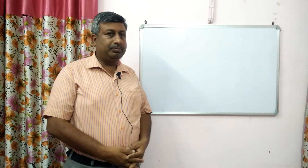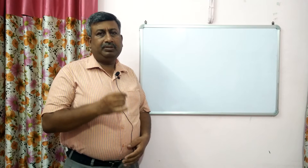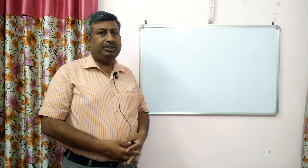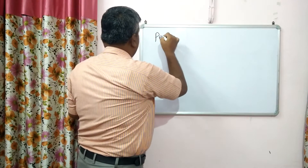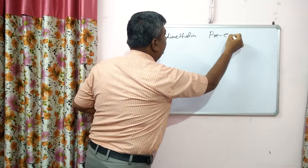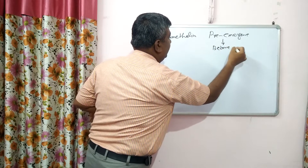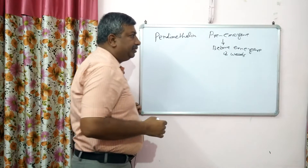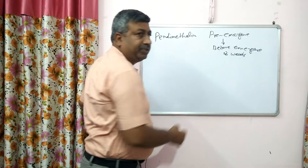Here I will explain about the dose of pendimethalin — how to calculate the dose of pendimethalin in different volumes of water. Pendimethalin is a very common pre-emergence herbicide and it is used in most crops. Pre-emergence means it is applied before the emergence of weeds.